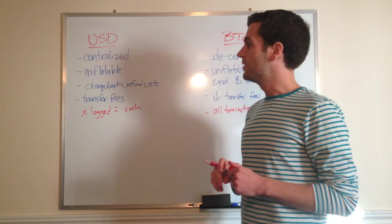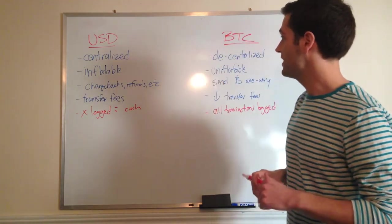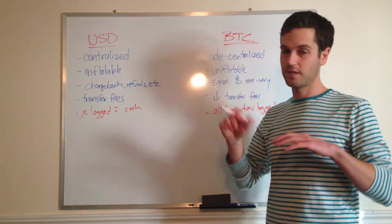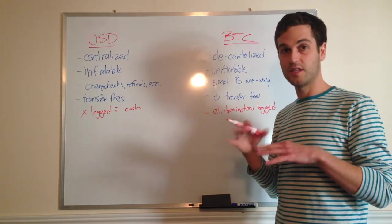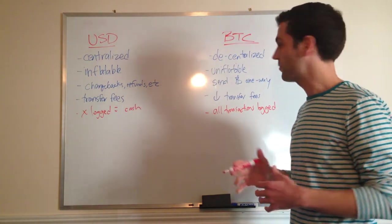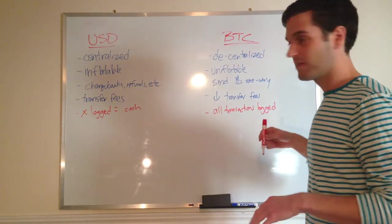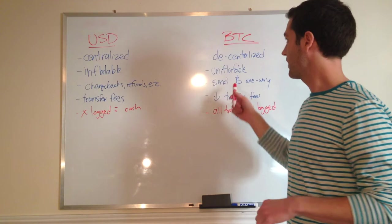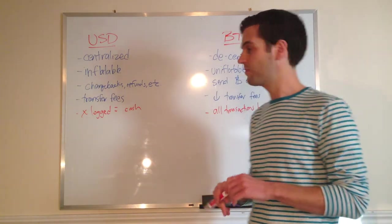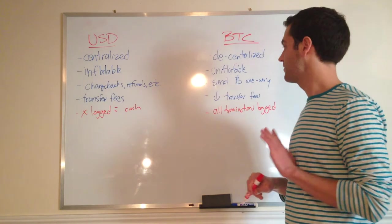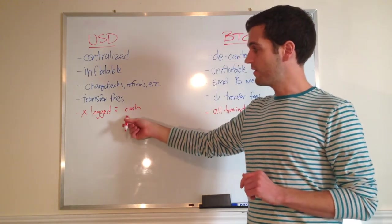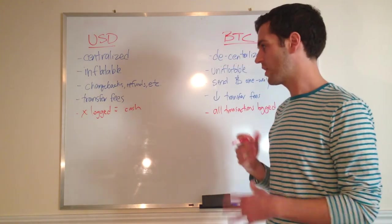Again, centralized—every country is centralized, it's a private company that manages the money supply. Bitcoin: decentralized. Inflatable: you can add more. Bitcoin has a fixed amount. What happens when you have a fixed amount and there's more demand for it? We'll just go down to lower digits. Transfer fees: lots of intermediaries and costs. Bitcoin: very low transfer fees. US dollar: if it's logged, no—cash is not logged, but generally most transactions are. Bitcoin: all transactions are logged in the blockchain.